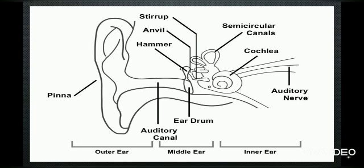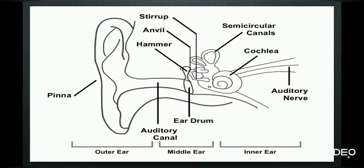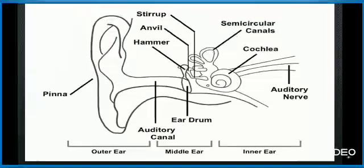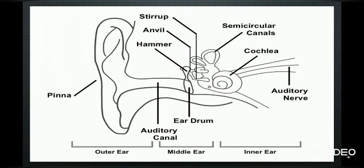First of all, here we have the structure of an ear. We have three basic parts: the first is the outer ear, the second is the middle ear, and the third is the inner ear. The outer ear contains the auditory canal or ear canal. The ear drum is in the portion of the middle ear, and in the inner ear we have ossicles and the auditory nerve. You have to focus on these four basic parts: ear canal, ear drum, ossicles, and auditory nerve.